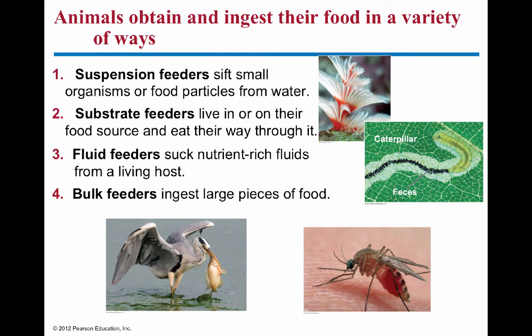There are four main ways of ingesting food. One type is suspension feeding, where liquid is passed across a body part or through the cells of the animal and they capture little particles from the water. Classic examples of filter or suspension feeders are sponges and bivalves like clams, which sweep food across their gills and send it to their mouth.